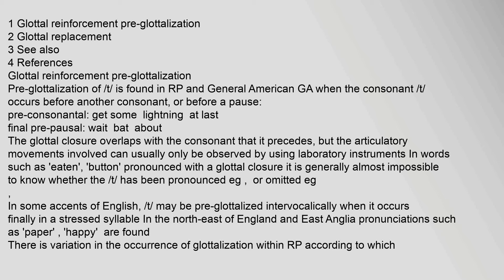It is generally almost impossible to know whether the 't' has been pronounced or omitted in some accents of English. 'T' may be pre-glottalized intervocalically when it occurs finally in a stressed syllable in the northeast of England and East Anglia. Pronunciations such as 'paper' and 'happy' are found there. There is variation in the occurrence of glottalization within RP according to which consonant follows 't'.